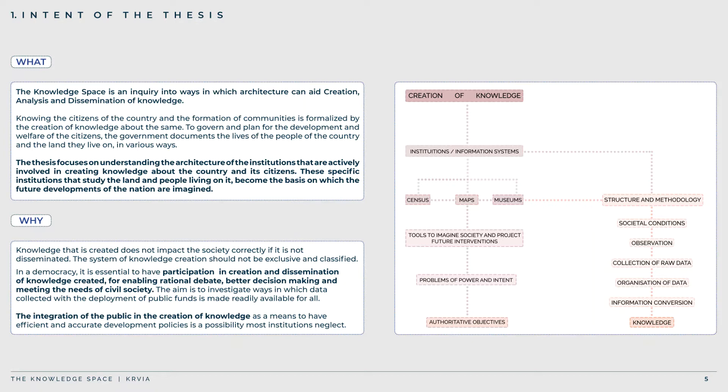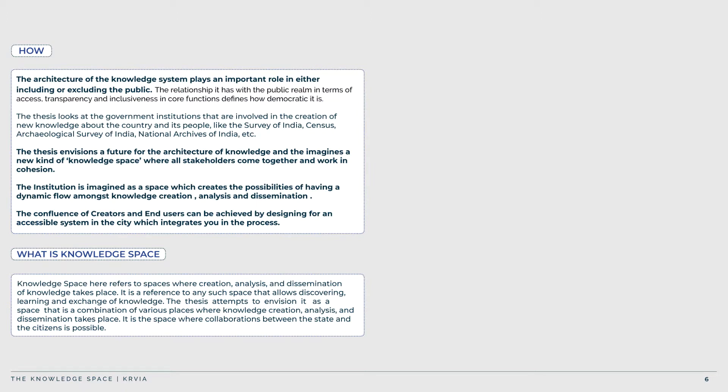Integration of the public in the creation of knowledge is a possibility most government organizations neglect. The architecture of an institution plays an important role in either including or excluding the public. The relationship it has with the public realm in terms of access, transparency, and inclusiveness in the core functions defines how democratic it is. The confluence of creators and end users can be achieved by designing for an accessible system in the city.